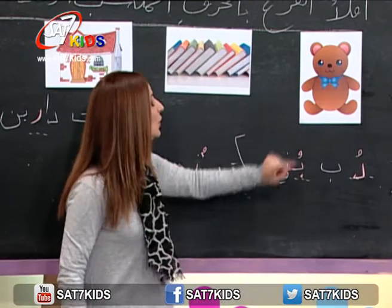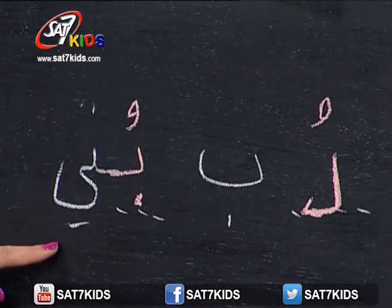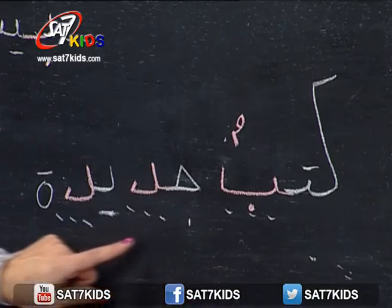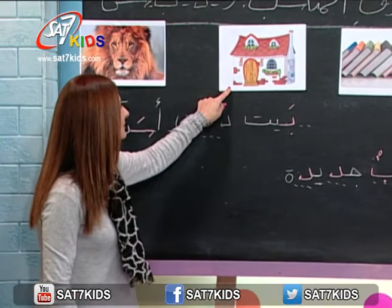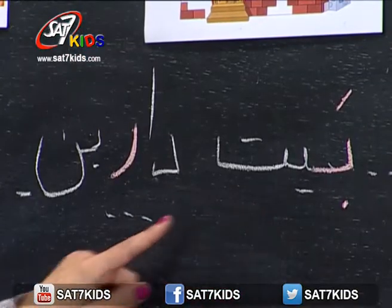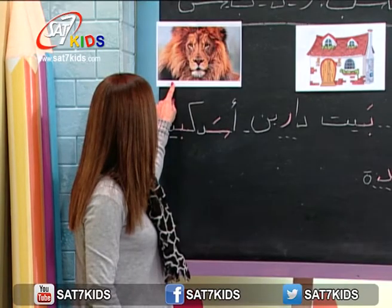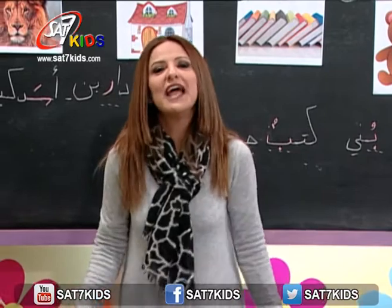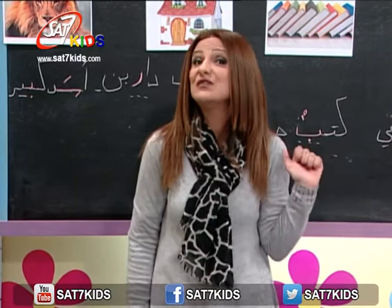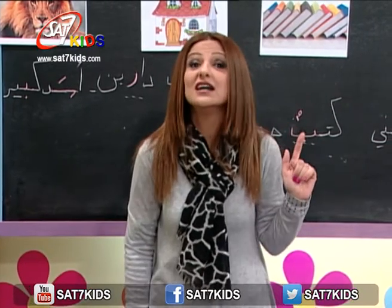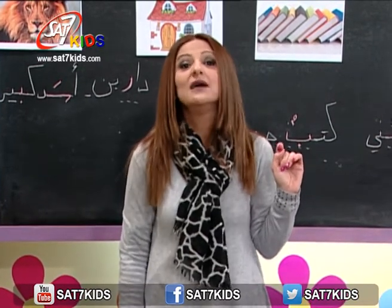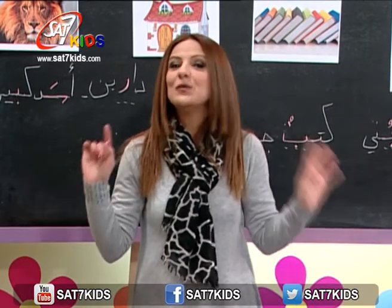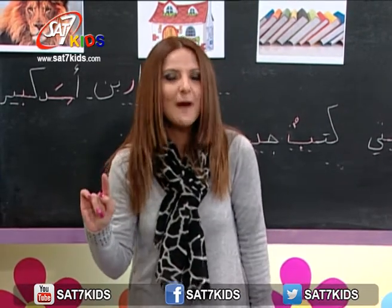وهيك بيكون صار عندي أسد كبير. خلينا نرجع نعيد الكلمات كلها: دب بني، كتب جديدة، بيت دارين، وأسد كبير. هيك ما نكون عملنا مراجعة سريعة للأحرف يلي أخدناها. نرجع من التذكرة: حرف الدال د، حرف الراء ر، حرف السين س، وحرف الباء ب. ما تروحوا، حضروا الورقة أو القلم أو الدفتر لأنه بعد عنا تمارين كتير وبعد عنا مراجعة كمان.